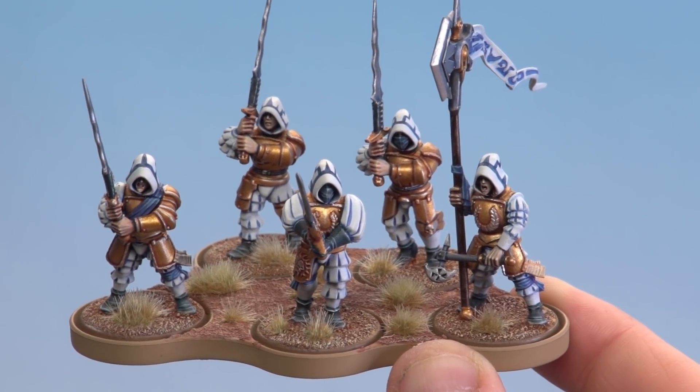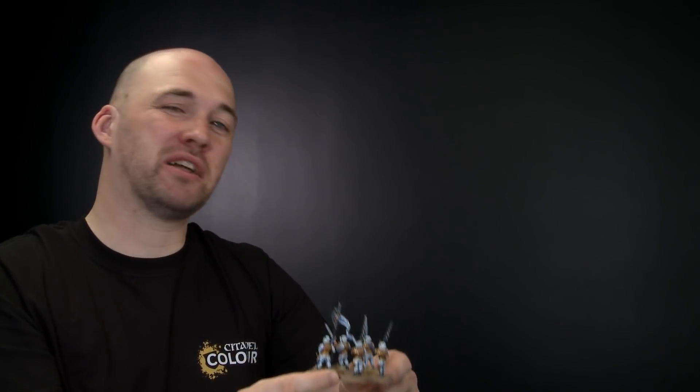And there we are, the movement tray is done and it looks great. Now remember in this video I painted mine to match my army but you can paint yours in whatever colors you want to. You can even just start by undercoating them and leave them like that and then add some texture at a later time.